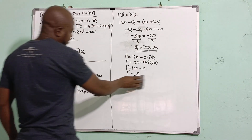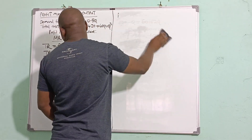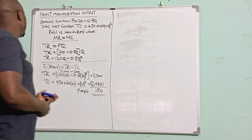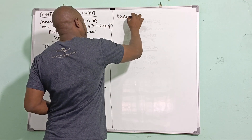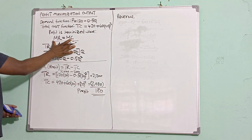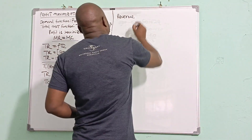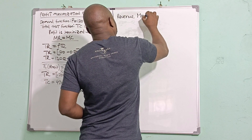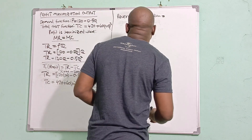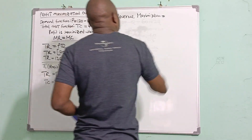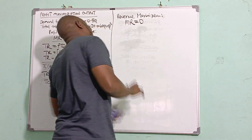There are instances where the examiner is not asking for the profit maximizing output but instead asking you to compute revenue maximization. Revenue maximization has its own setting. While profit maximization requires MR = MC, revenue maximization requires marginal revenue to equal zero.